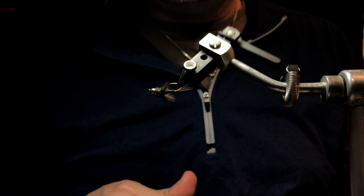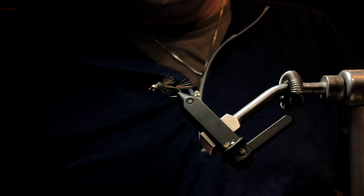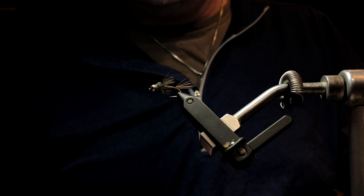There you go, that's the split back version of the CDC Drunella dodsi nymph. I love to kind of flare those tails up a little bit to make them flare—you just kind of bend them upwards. I do hope that this pattern catches you a pile of fish. If you like this video, go ahead and thumbs up it and be sure to subscribe. Tight lines.